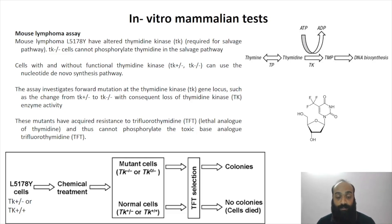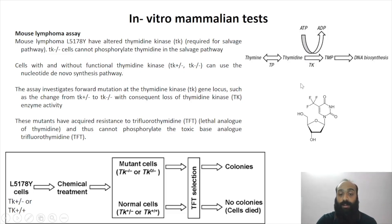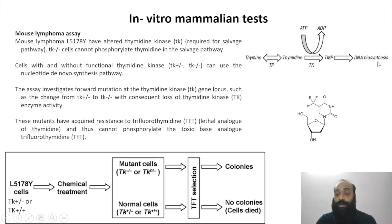If TFT is incorporated into DNA during replication, the cell dies and no cell colonies will form. Cells with functional thymidine kinase will convert thymidine — or any analog of thymidine — into TMP, which is then incorporated into DNA. So if TFT is present, a functional TK will incorporate it into the DNA, causing cell death.